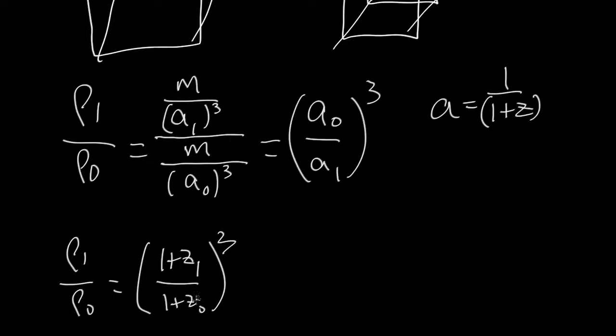Now, right now, the redshift is 0, so the density of the universe is going to go as the cube of the redshift, where I've made redshift just equal to the redshift back at time 1. So the density of the universe goes as the cube of the redshift.